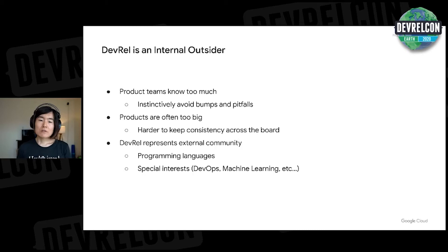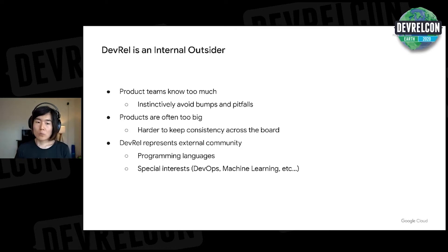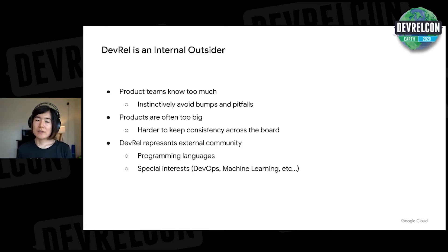DevRel also represents external communities as well. We often work with programming language communities such as Ruby, Go, Python. And we also work on special interests — some of us are specialized in DevOps, machine learning, big data, etc. So we are more suited than product teams to navigate through external use cases and challenges.